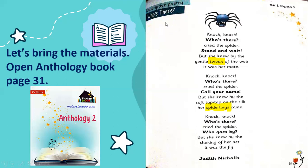I'm going to read. The title of this poem is 'Who Is There.' Knock, knock, knock — who is there? Cry the spider. Stand and wait. But she knew by the gentle tweak of the web, it was her mate. Let's read it again so we understand it better. Knock, knock — who is there? Somebody knocked and the spider cried: who is there? Stand and wait. The spider knew by the gentle tweak of the web it was her mate — because it's only her mate that will gently tweak the web when coming in.